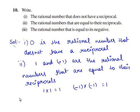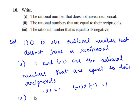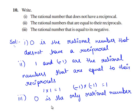Now let us go to the third bit. Here we need to write the rational number that is equal to its negative. 0 is the only rational number which is equal to its negative.